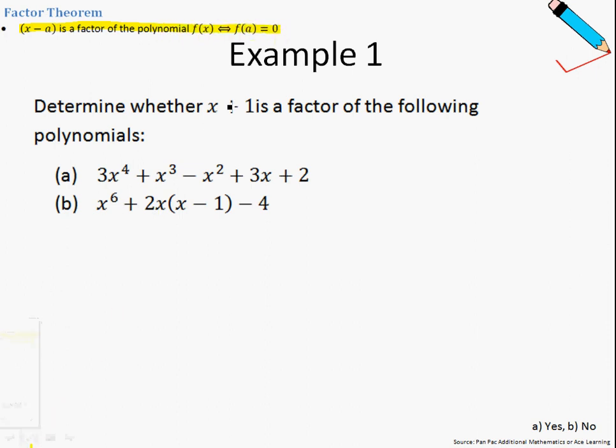So let us first look at the given factor. So if x+1 is the factor, and if I want to find my a, all I need to do is to equate this to 0 and then solve for x, which is negative 1. So meaning to say, applying our understanding from the factor theorem,